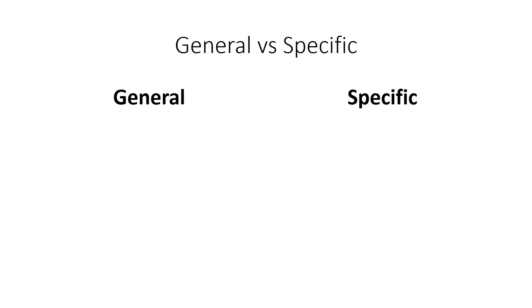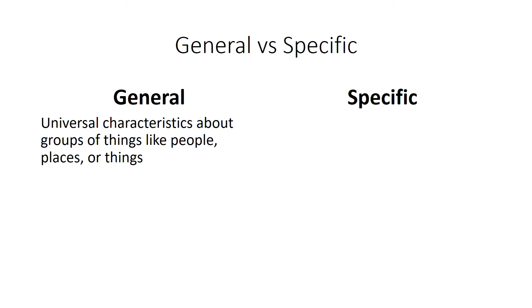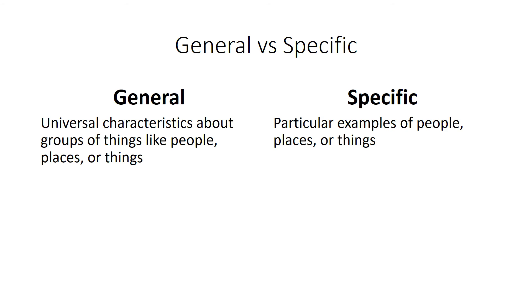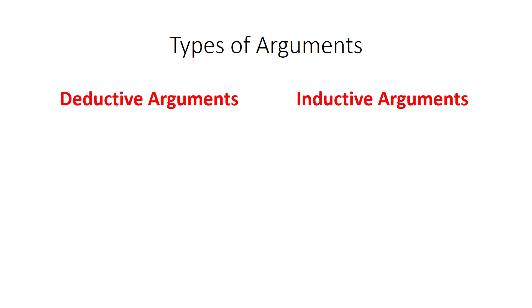So the difference between general and specific is: general refers to universal characteristics about groups of things like people, places, or things, while specific refers to particular examples. We saw specific cars, but their universal shared characteristics are what is general. We saw specific types of pencils, but what they had in common are their general characteristics. It's important to know these terms because the two types of arguments we'll look at today both deal with general and specific observations.